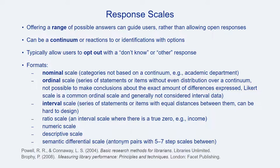Interval scales have elements in order with equal and meaningful value between the intervals. Numerical scales use numbers instead of words. Descriptive scales use words or phrases, often including significant detail. In some cases, categories might overlap — for example, a scale might be both numeric and graphic. A nominal scale typically is used for categories that aren't on a continuum, like identifying an academic department affiliation from a list.